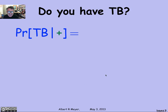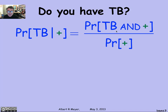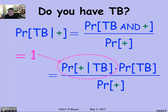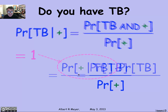What we're trying to calculate is the probability that you have TB given that the test came in positive. Using the definition of conditional probability, the probability that you have TB given that the test came in positive is simply the probability that both the test comes in positive and you have TB, divided by the probability that the test comes in positive. This intersection — this AND of having TB and the test coming in positive — is simply the probability that the test comes in positive given that you have TB, times the probability that you have TB. We know that's 1, because if you have TB, the test is definitely going to say positive. So that simplifies things nicely.